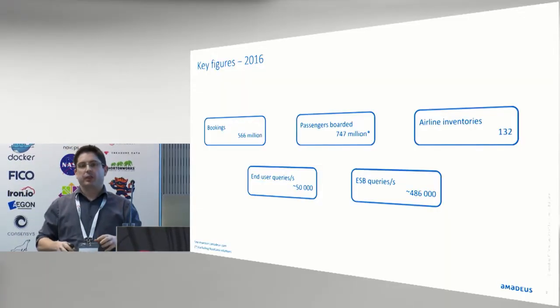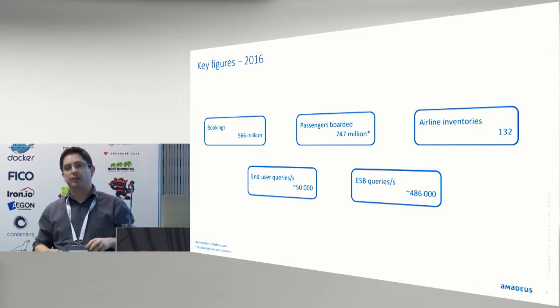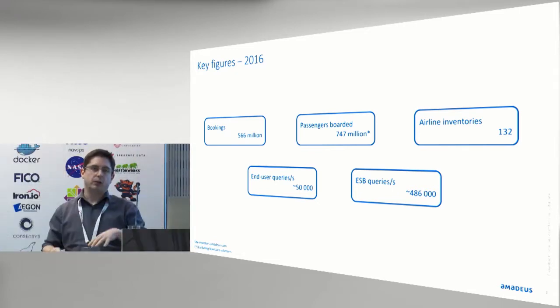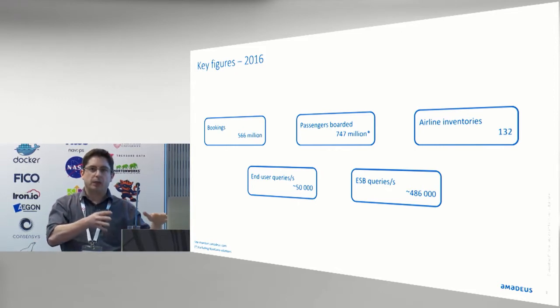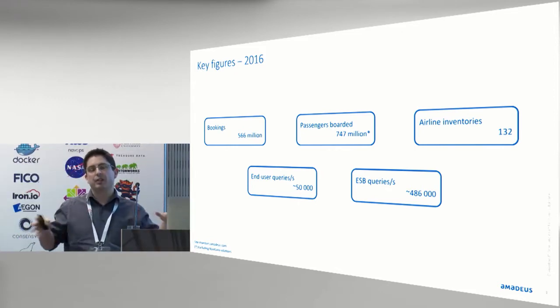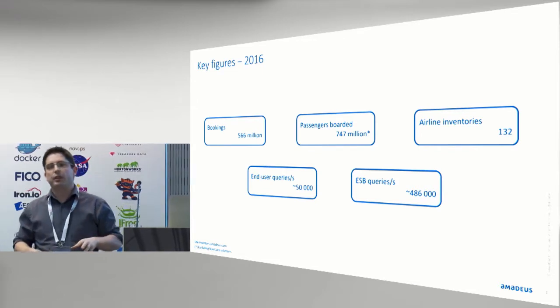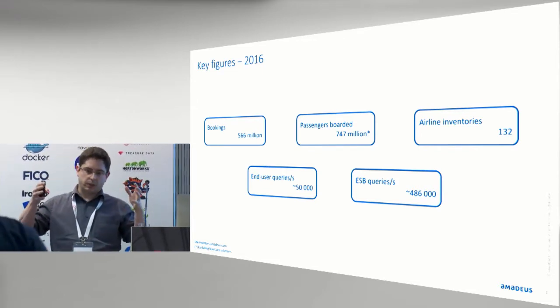A few technical figures: we handled last year about 566 million bookings and boarded 747 million passengers. We also acquired a company called Navitaire, and with their passengers that figure goes above a billion. We host 130 airline inventories — meaning the inventory of how many seats are available on a given plane at a given time are hosted in our systems. We handle about 50,000 end user queries per second, and our enterprise service bus peaks at over 500,000 queries per second.